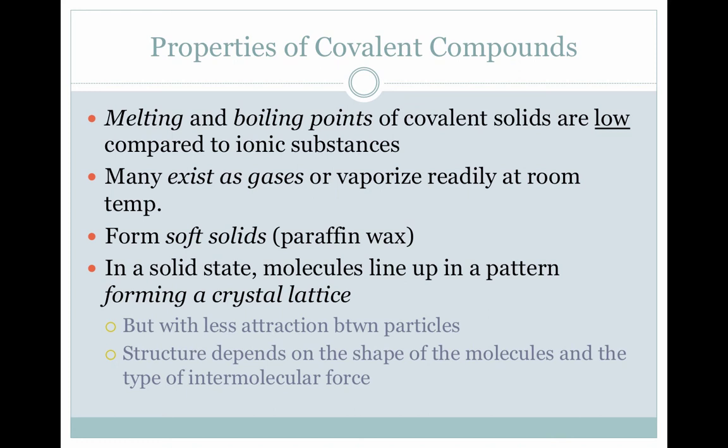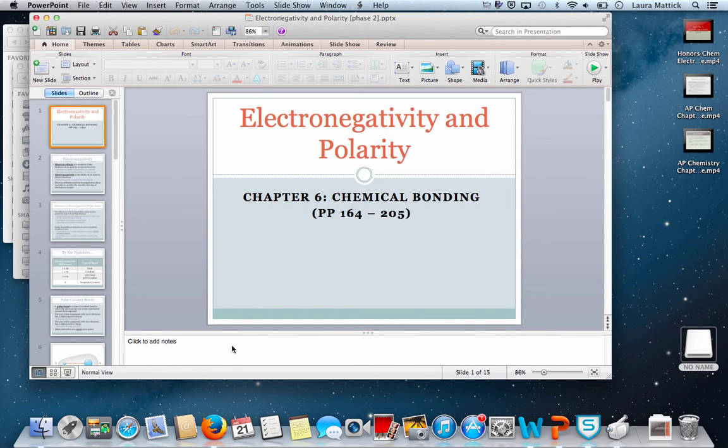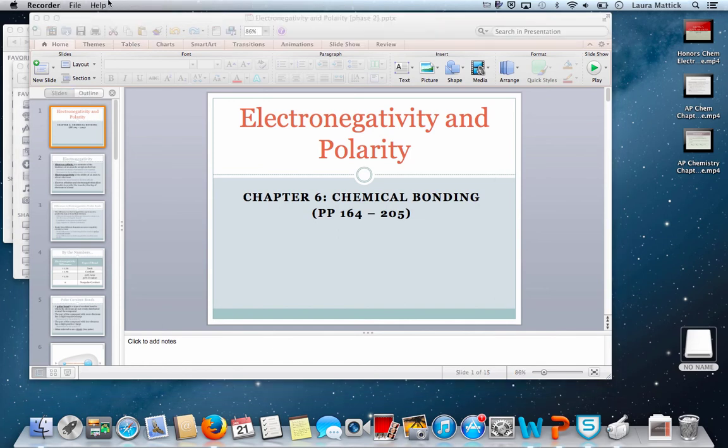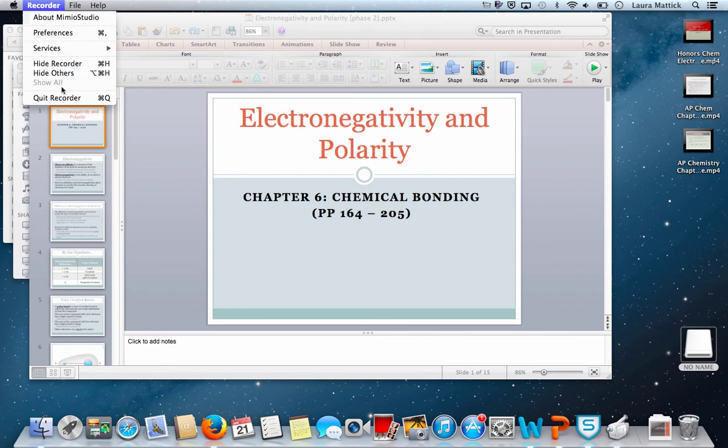Melting and boiling points of covalent solids are low compared to ionic — that all depends on how strongly the molecules are held together. Many covalent substances exist as gases or turn into gases very quickly. They can also exist as soft solids like candle wax. In a solid state, the molecules line up forming a crystal lattice, but it's less strong than an ionic crystal lattice. And that's the end of this lecture.